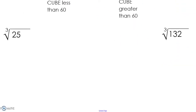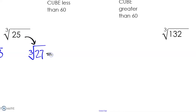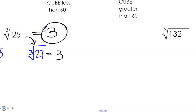Let's look at the cube root of 25. On the lower end, the perfect cube closest to 25 is going to be the cube root of 8. And then greater than 25 is going to be the cube root of 27. Since 25 is closest to 27 and the cube root of 27 is 3, we can estimate the cube root of 25 to be 3 to the nearest integer.